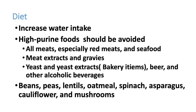Diet is very important in high uric acid. High-purine foods should be avoided, including red meats, seafoods, meat extracts, yeast and yeast-containing bakery items, beer and other alcoholic beverages. Beans, peas, lentils, oatmeal, spinach, cauliflower, and mushrooms should also be avoided.